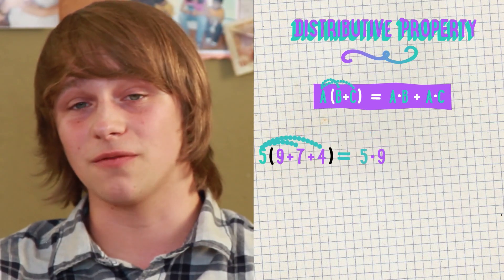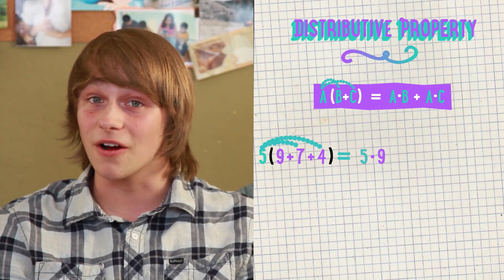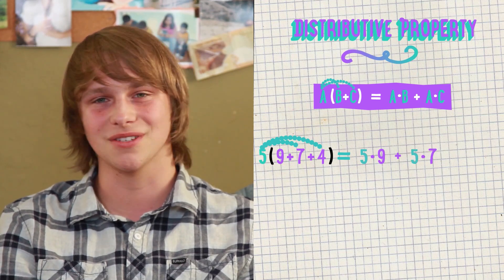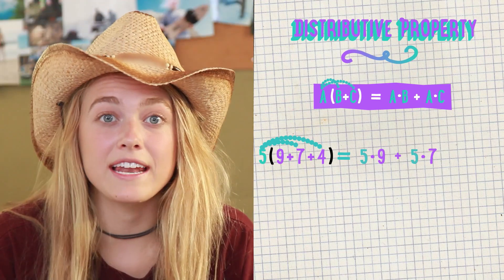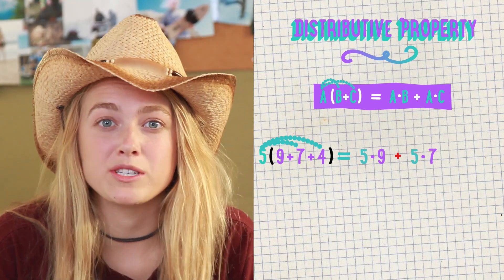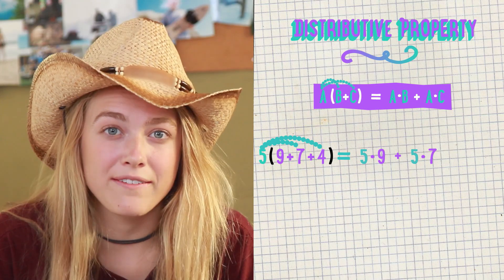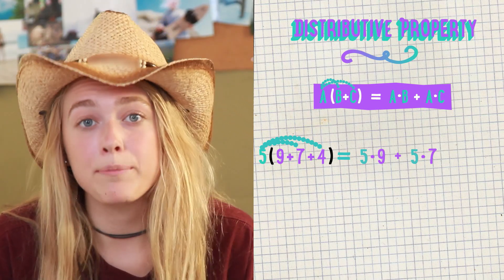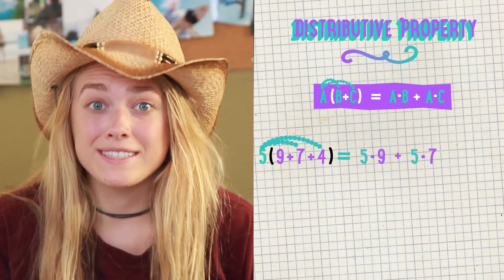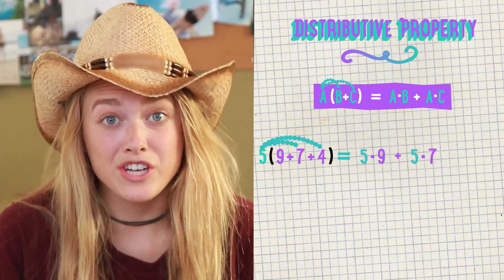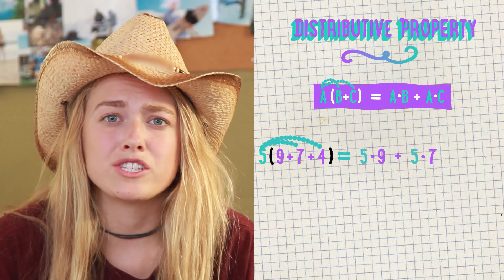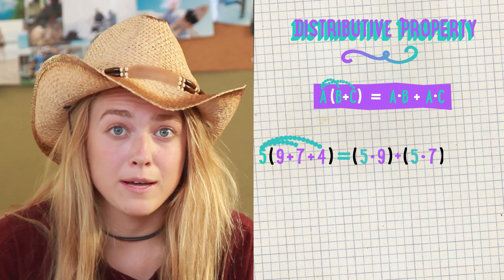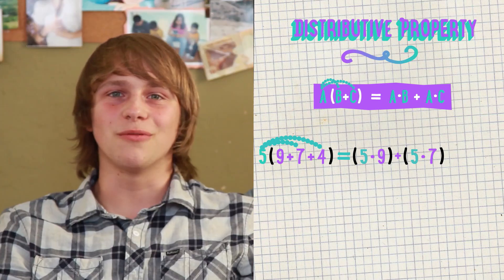Let's start by multiplying the 5 and 9 together. Since we have to be fair, let's also multiply the 5 and 7 together, so no one feels left out. Notice that as we're going, we are keeping the addition sign between the 9 and the 7. When we distribute, we keep the operation sign to separate the numbers, like when we made bracelets for Hannah and Jasmine. Mathematically, this translates to the quantity of 5 times 9 plus the quantity of 5 times 7.